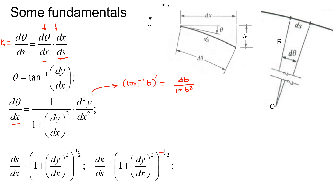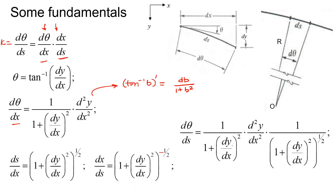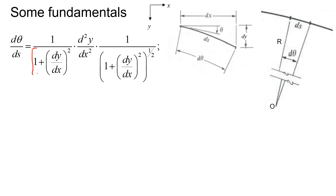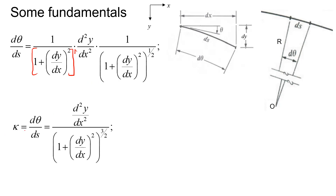Multiplying these two quantities together to get the curvature gives a combined expression. Since one factor has power 1 and the other has power 1/2 on the same base, we add exponents, finally obtaining: curvature = d²y/dx² / [1 + (dy/dx)²]^(3/2).